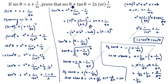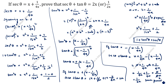We have proved that secant theta plus tan theta is equal to 2x or 1 by 2x. LHS equals RHS, hence proved. Thanks for watching this video.